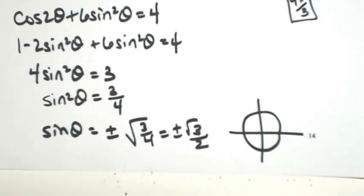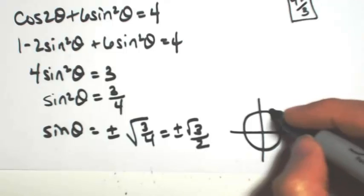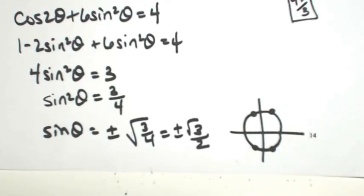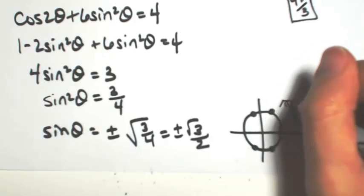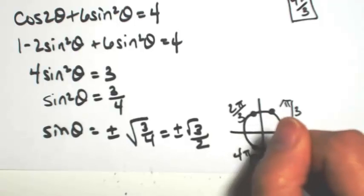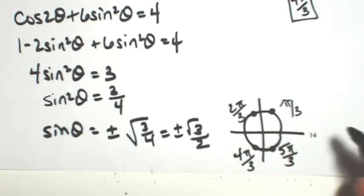I'm looking for where the y coordinate is ±√3/2, which are at our thirds. So π/3, 2π/3, 4π/3, and 5π/3.